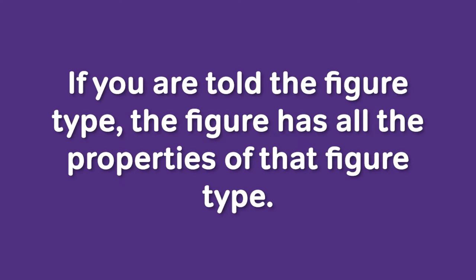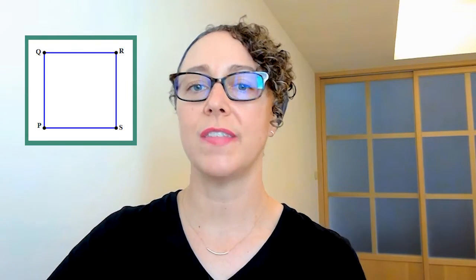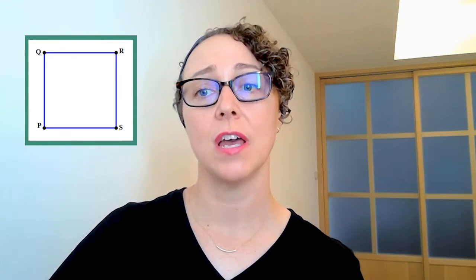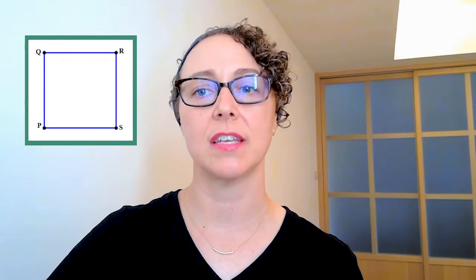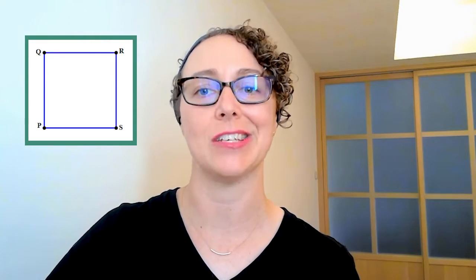The next safe assumption for both problem solving and data sufficiency question types: if the prompt names the figure, then that figure has all the properties of that figure type. So if you're given a shape and told that it's a square, then and only then is it safe to assume that the angles QPS, PQR, and RSP are right angles and that the line segments QR, RS, PS, and QP are all equal lengths.